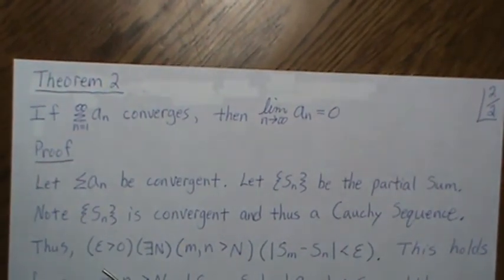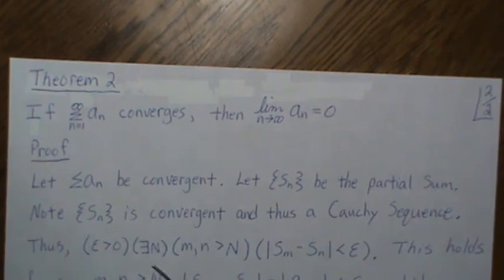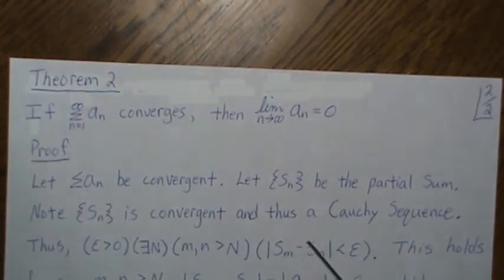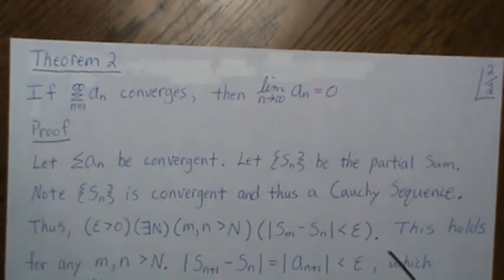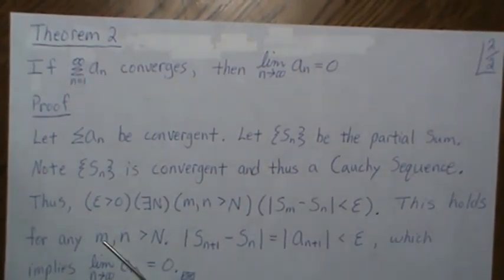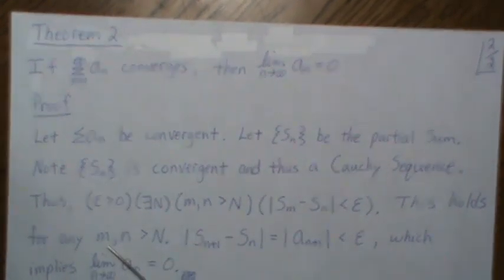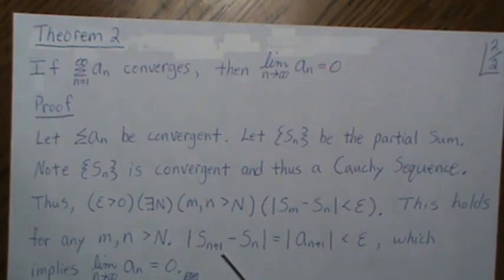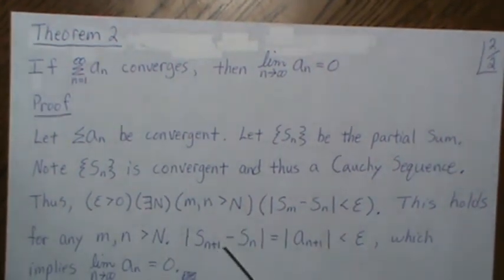And what that means is that given epsilon greater than zero, there exists an N such that when we have M and N greater than N, then the difference, and this is for any M and N, the difference between these two partial sums is less than epsilon. So they're really close when we get far enough down the road. Now this holds for any M and N. So why don't we make this M just N plus one.